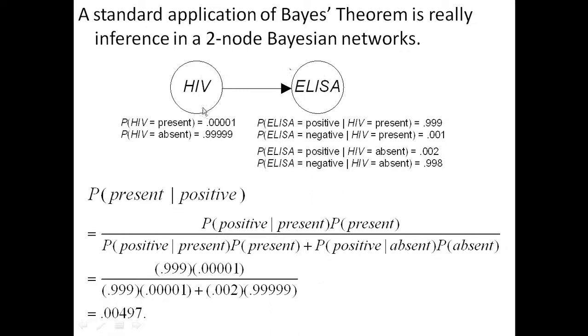I won't belabor this example. It's just to show you that this really is a Bayesian network, and it uses Bayes' theorem to do inference.